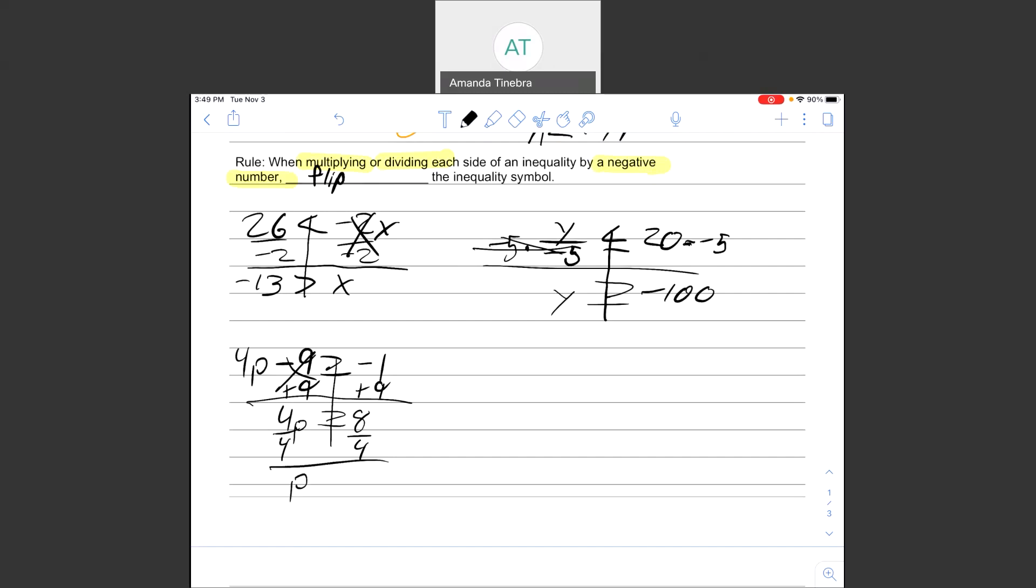This is a positive number. So, even though I'm multiplying, I'm still not flipping my inequality side.